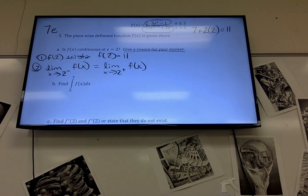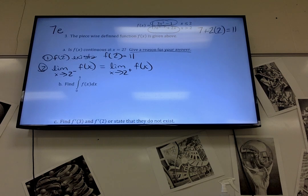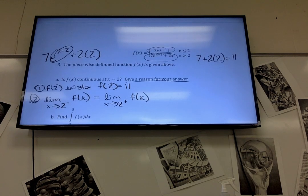So 7e to the x minus 2, we're plugging in 2. Anything to the 0 is just 1. Plus 2 times 2. So e to the 0, that's 1. 7 times 1 is 7. Plus 4. Oh, 12.